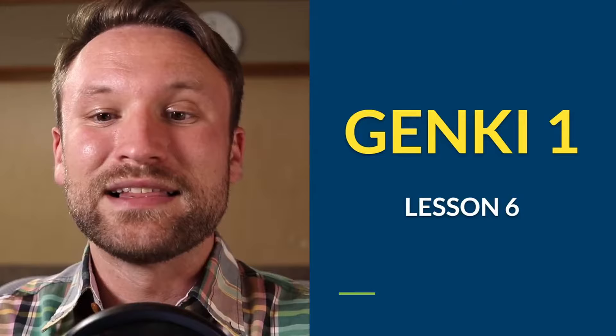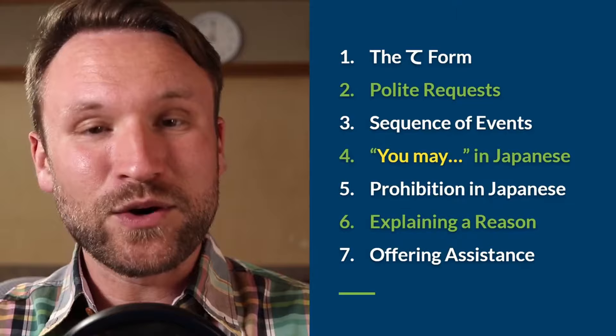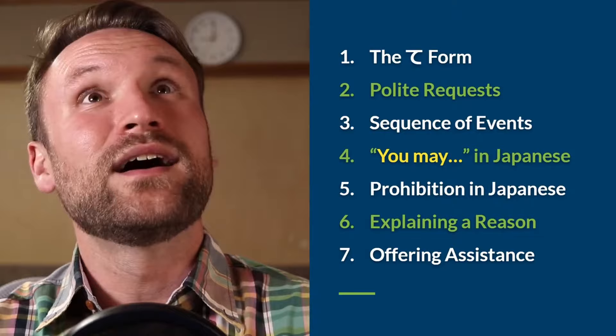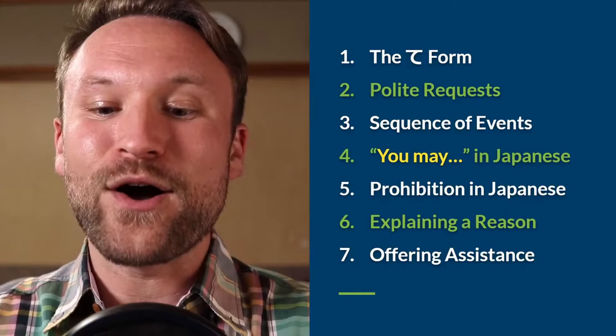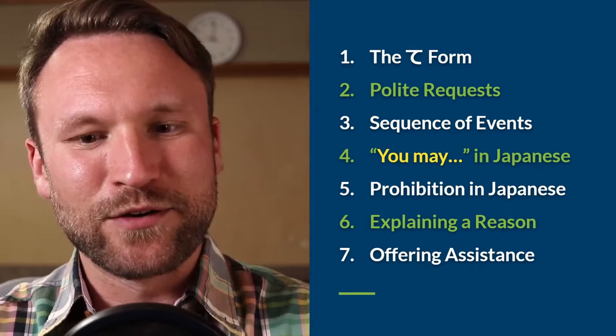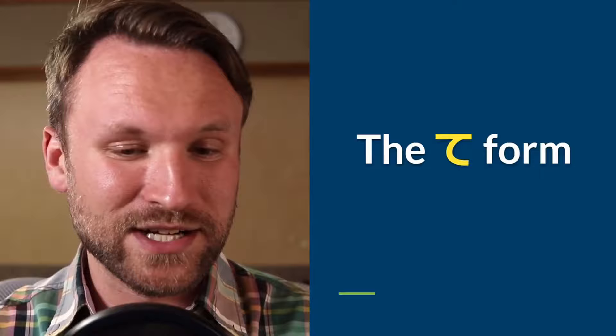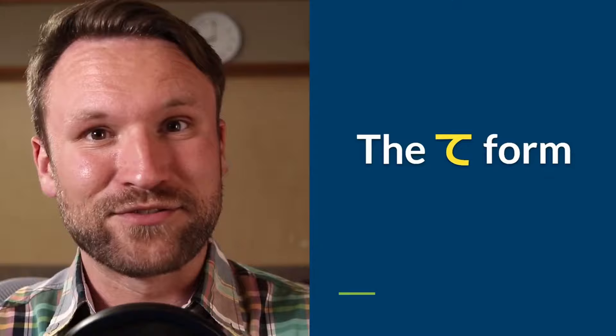Lesson 6: the te-form. Today we're covering the te-form, polite requests using the te-form, sequence of events using the te-form, you may or may I using the te-form, prohibition using the te-form, explaining reasons (which does not use the te-form), and offering assistance (which uses something we already learned). The first part — the te-form itself — is the most difficult, with the most memorization. Once we get that down, the rest of the lesson is really straightforward with only about one explanation slide per section.